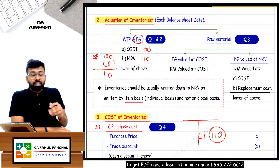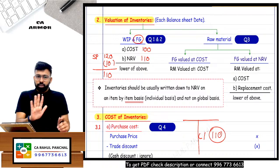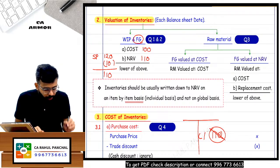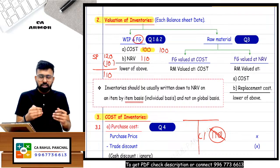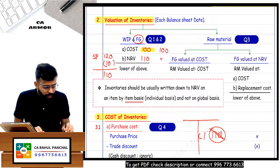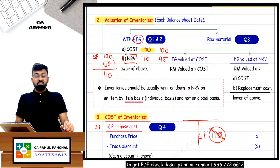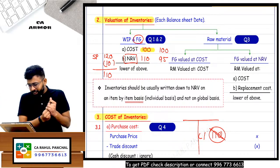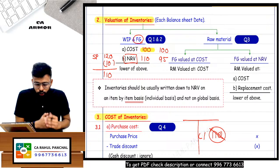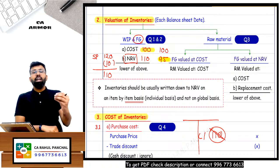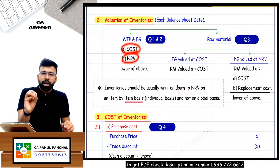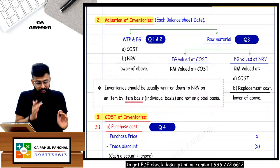You have to record inventory at cost price, which is 100. But if market demand has fallen and you can sell the chair for only 95 rupees NRV, that is a future loss, and conservatism says future loss should be recorded now. So inventory should be recorded at 95. Therefore: inventory should be recorded at cost or NRV, whichever is lower.